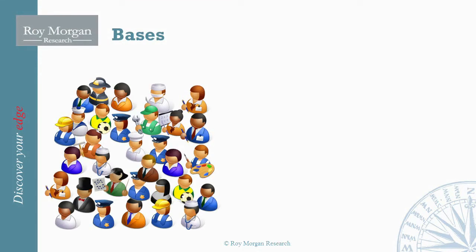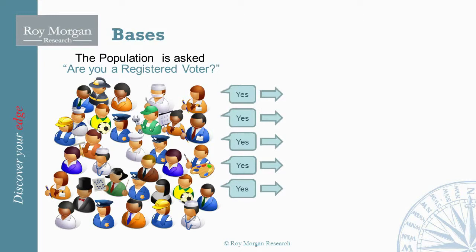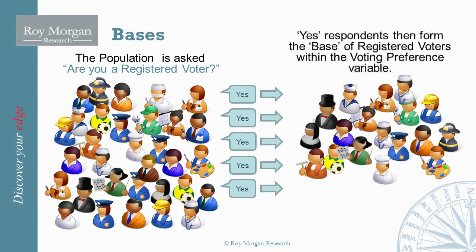For example, before respondents are asked for their voting preference, they are first asked: 'Are you a registered voter?' All those respondents who answer yes are grouped as registered voters. This registered voters group is the base within the voting preference variable.